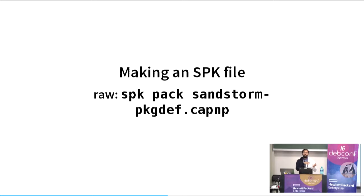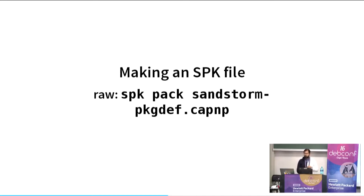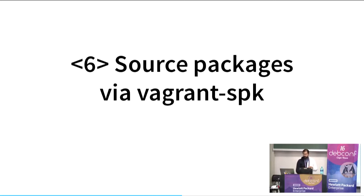This is different from a .deb, where signatures are done at the archive level, not at the .deb level. To make a Sandstorm package file, the most raw way is to take the sandstorm-package.def.capnp and pass it to the spk pack command, which generates an SPK file based on the list of files and metadata inside the package. If you do it that way it'll work, but it'll slurp up whatever files of that filename exist on your system, which may or may not be what you want. There's also no concept of source packages that way — that was how things were until a year and a half ago when I started at Sandstorm.